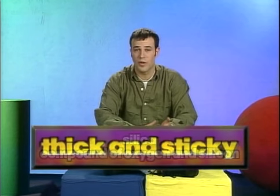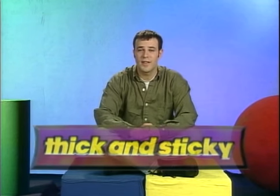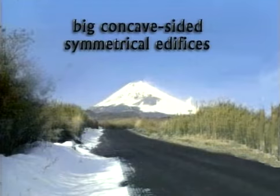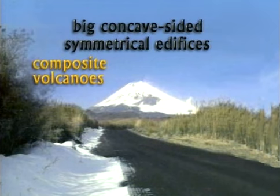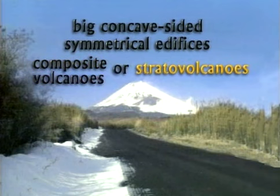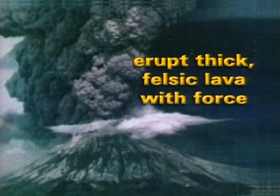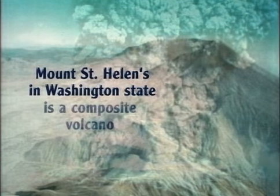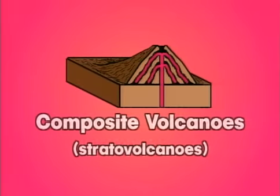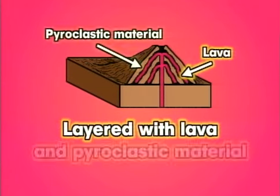Felsic lava forms distinctive features in the landscape. The big, concave-sided, symmetrical edifices we typically associate with volcanoes are called composite volcanoes, or stratovolcanoes — strato, like strata, for layers. These monsters generally erupt thick, felsic lava with explosive force. Mount St. Helens in Washington State is a composite volcano. The insides of composite volcanoes are layered with lava and pyroclastic material, including ash and little bits of volcanic glass.